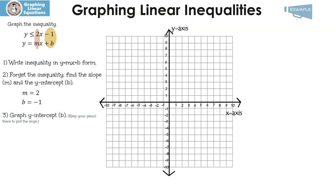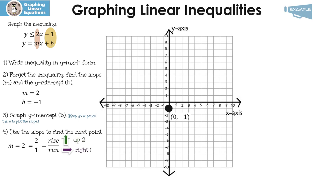Next, we need to graph just like we always do. The first thing I'm going to do is graph my y-intercept, which is negative 1. Keep your pencil on that point because we're going to graph the slope next. The slope is 2, so we write it as a fraction: 2 over 1. That's rise over run. We're going to go up 2 and then run to the right 1. I'm going to go up 2 and run 1, then up 2 and run 1 again.